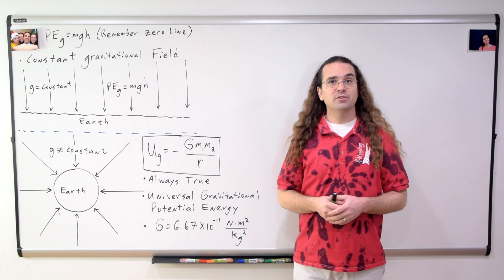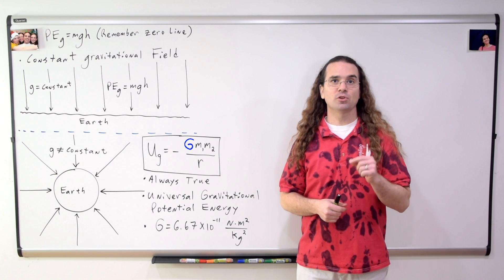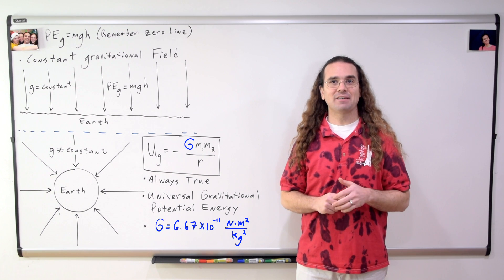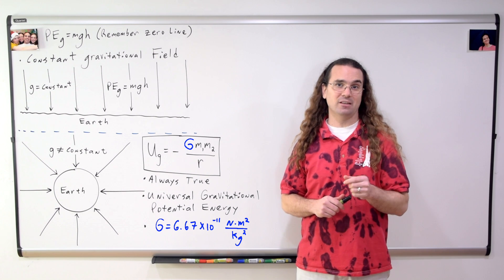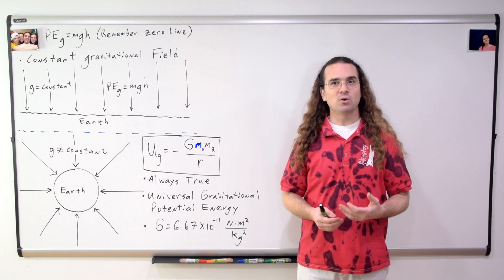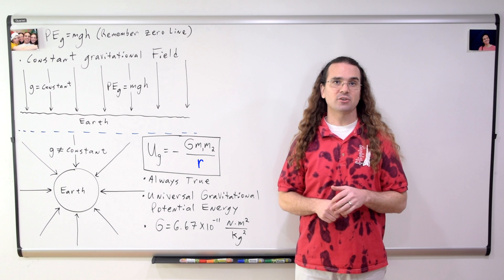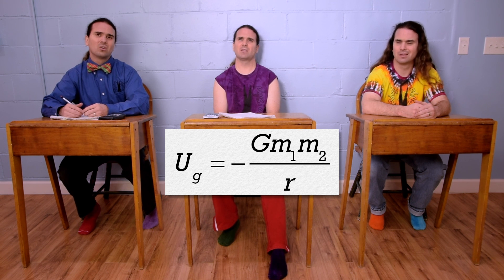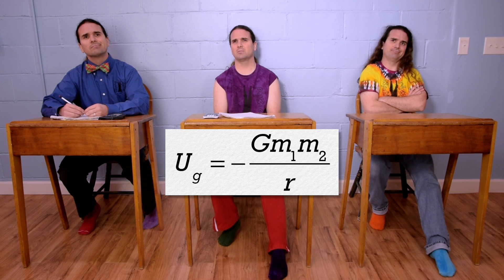The equation for universal gravitational potential energy is the negative of the quantity big G, the universal gravitational constant, which has a value of 6.67 times 10 to the negative 11 newtons times meters squared divided by kilograms squared, times mass 1 times mass 2, all divided by r, the distance between the centers of mass of the two objects. Isn't that Newton's universal law of gravitation? What's up with the negative? Where did the capital U for gravitational potential energy come from? I thought it was capital PE sub G.